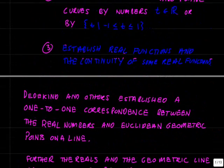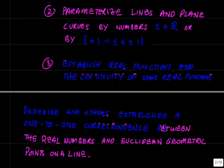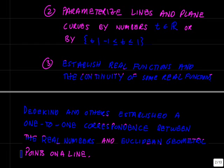First of all, the real number line was established with some degree of rigor. The important work of Dedekind and others, where a one-to-one correspondence was established between the real numbers and the Euclidean geometric points on a line. So Euclidean defined what a geometric line is and what points on it are in an abstract postulational formulation.